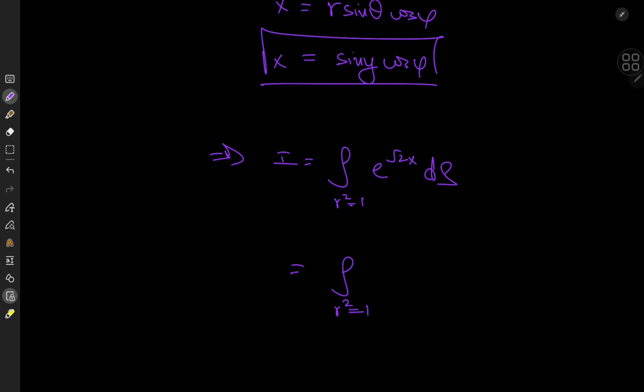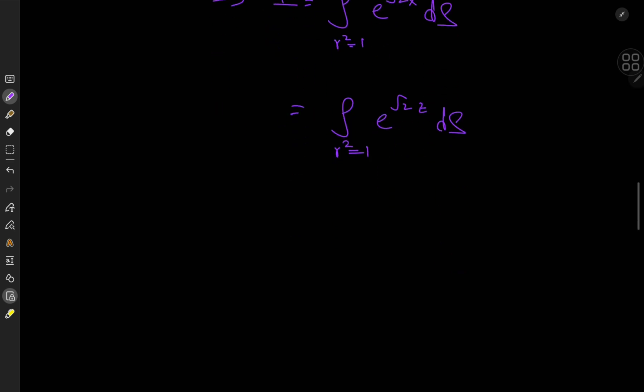and write this as integral over r squared equals one of root 2 times z ds. And the reason I want z here is because z in spherical coordinates equals the radius r times cosine of theta.